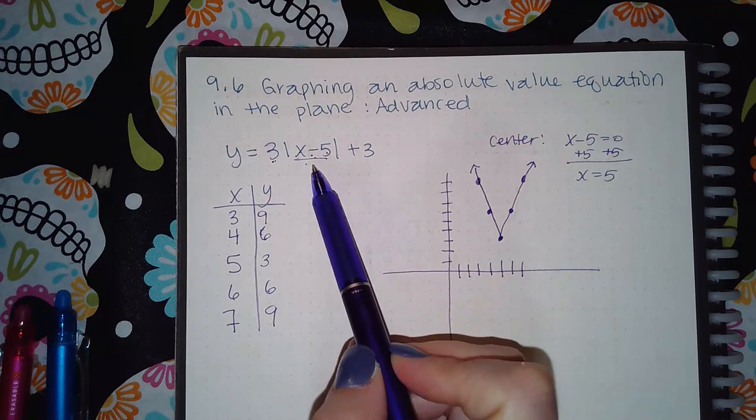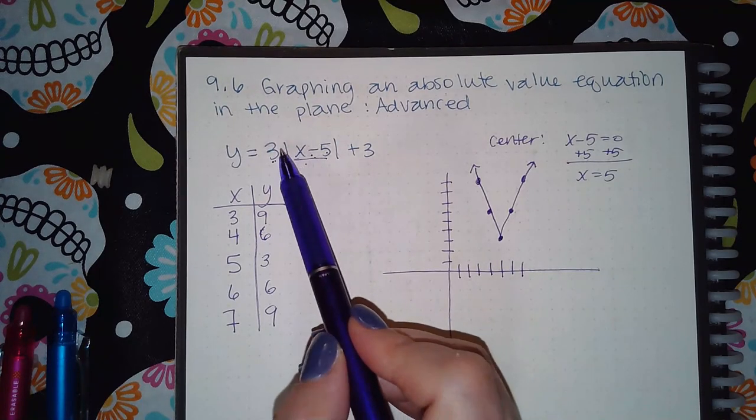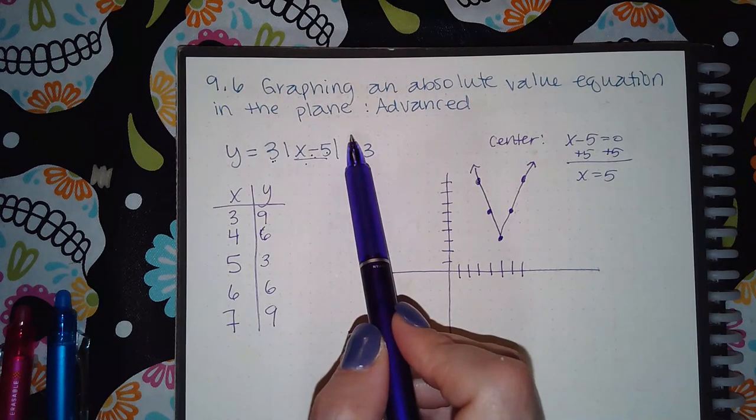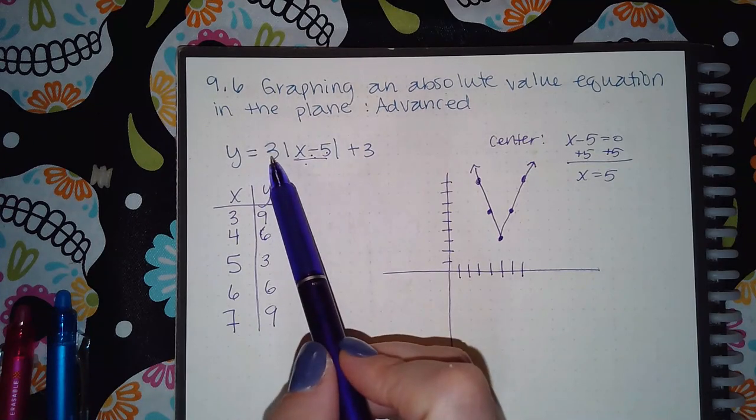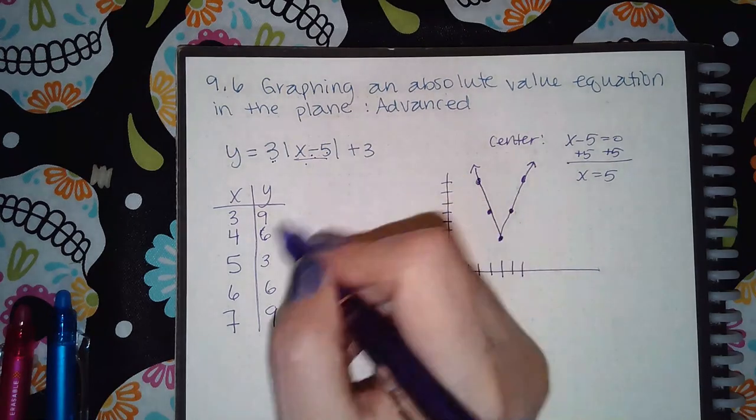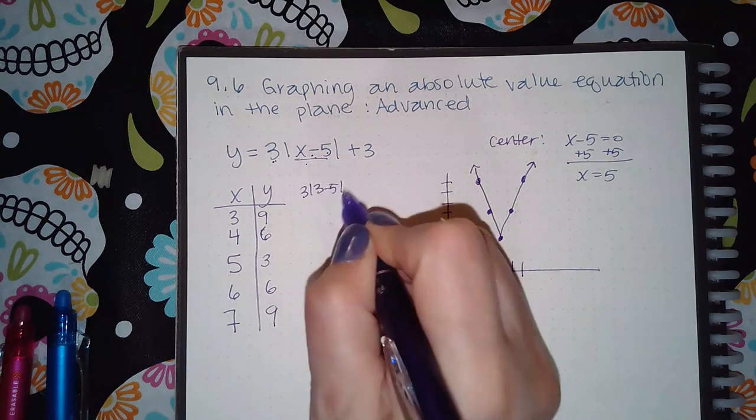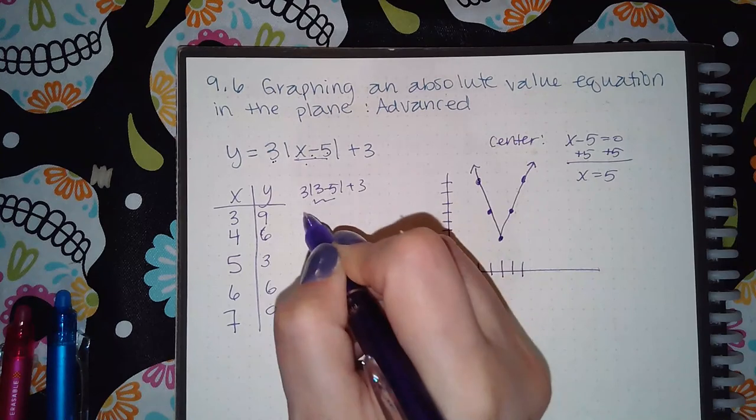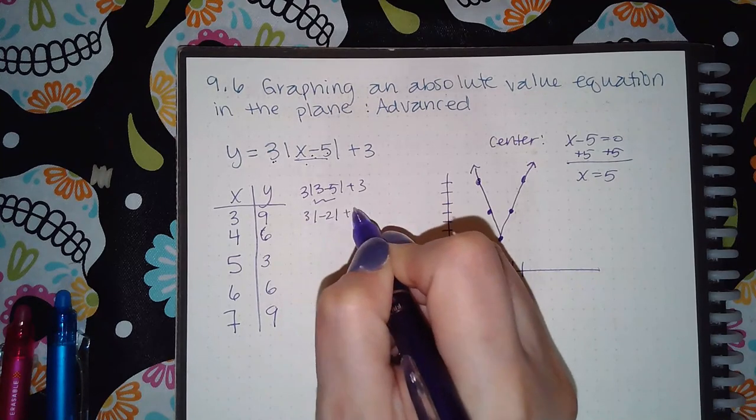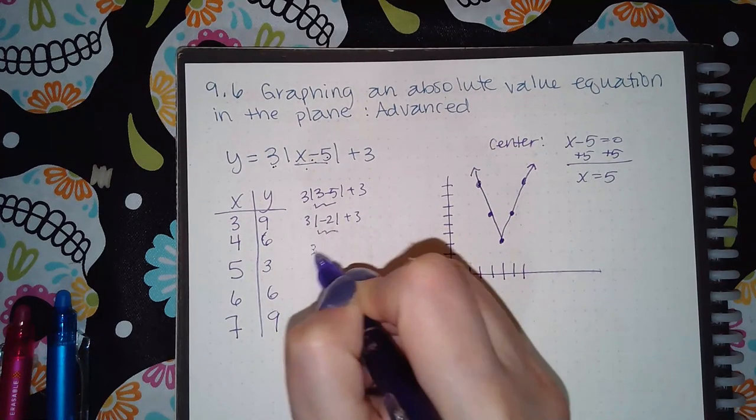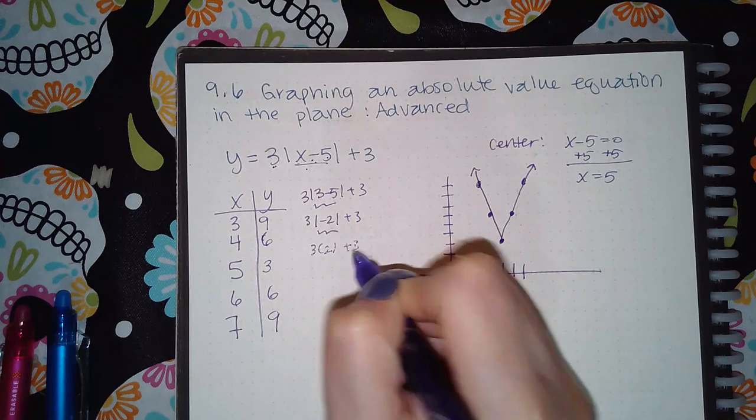do what's inside the bars first when you do your order of operations. Then you have to actually take the absolute value of that number before you can multiply. So when I'm doing, let's say three, I do have to do what's inside there first, then I have to actually take the absolute value of that, and then I